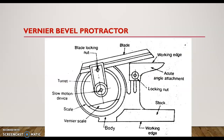Here is the detailed diagram of a vernier bevel protractor. There is a part known as the turret, which is rotatable. The main scale is fixed while the turret rotates. The vernier scale is fixed to the rotating turret, so the vernier scale is also rotatable in either clockwise or counterclockwise direction. This portion has the measuring faces of the instrument.